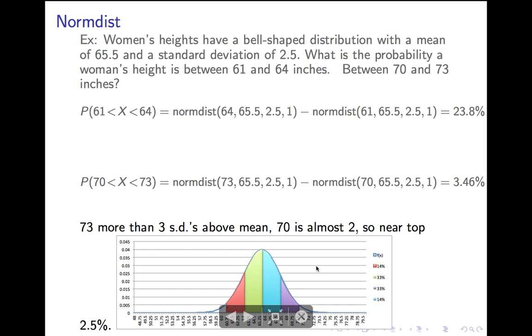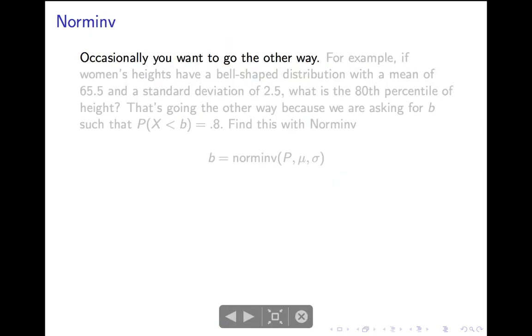So, it's pretty much just the area of this little white tail here. And that little white tail, because 95% is in the colored region, that white tail is about 2.5%. So, it's just a little bit more than that. 3.46%.